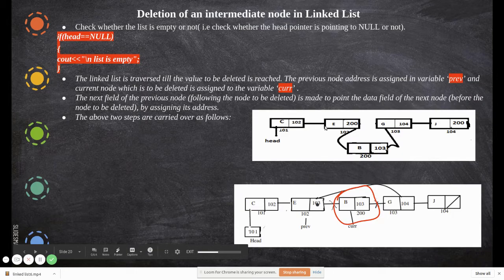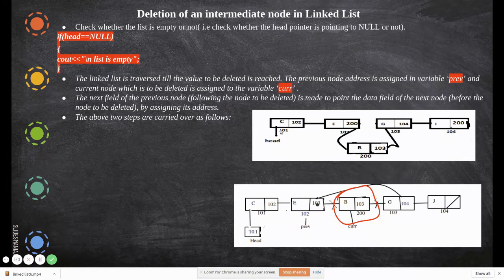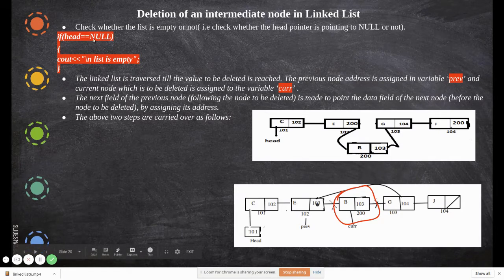In this video we are going to see how you can delete a middle or intermediate node. First we have to check whether any node is in the list — if there is any node, only then you can delete it. So first you check whether head is equal to null; if so, the list is empty.